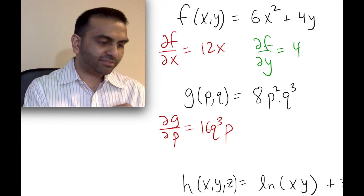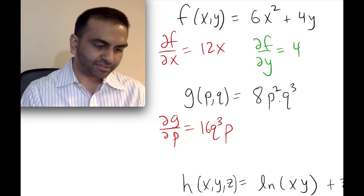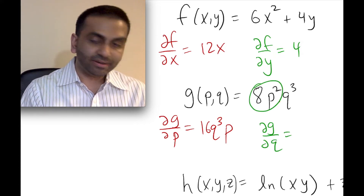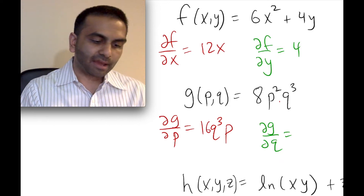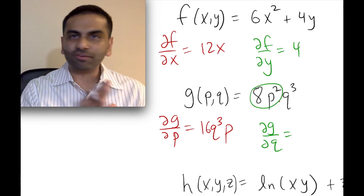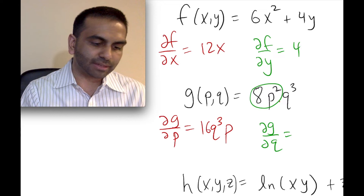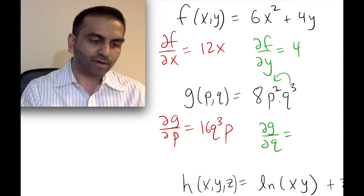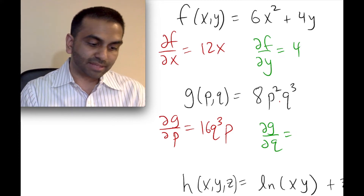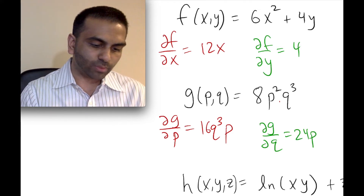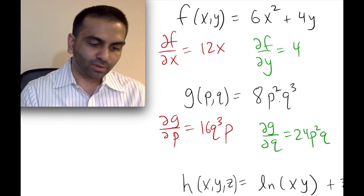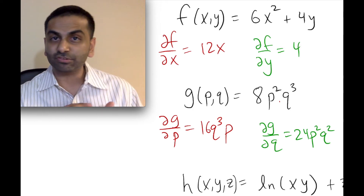Similarly, for the partial derivative of g with respect to q, now 8p² is the constant that just stays along for the ride. I take the derivative of q³, which brings the 3 out front: 8 times 3 = 24. Then q³ becomes q². So the partial derivative with respect to q is 24p²q².